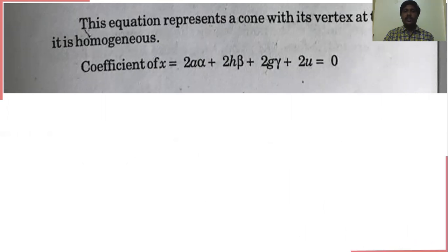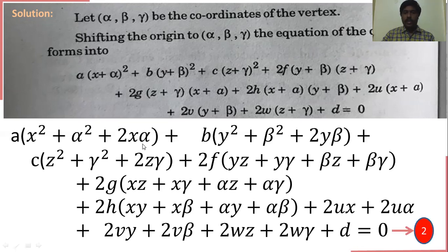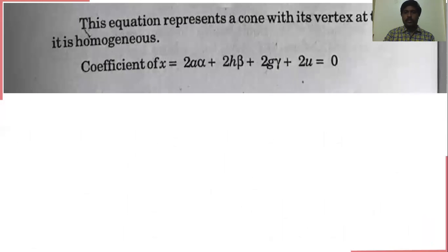Taking the second equation: if it represents a cone, then the coefficient of x in the above equation gives 2aα + 2hβ + 2gγ + 2u = 0. We take that as equation number 3.